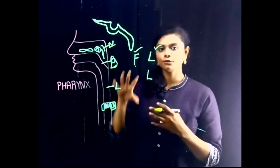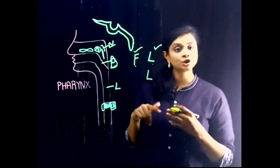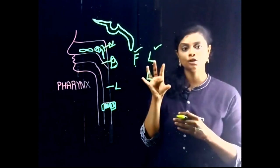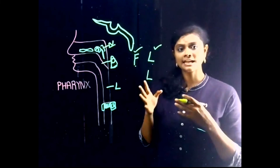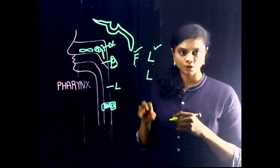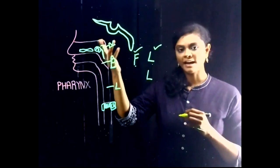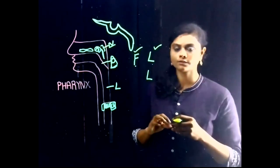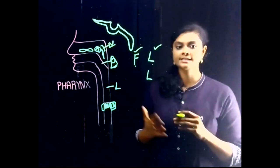The nasopharynx is supplied by the pharyngeal branch of the pterygopalatine ganglion — one of the four parasympathetic ganglia relevant to dentistry. The nasopharynx is supplied by the pharyngeal branch of the pterygopalatine ganglion, which is suspended from the maxillary branch of the trigeminal nerve. These are the nerve supply, anatomy, features of the nasopharynx and the general boundaries of the Pharynx.